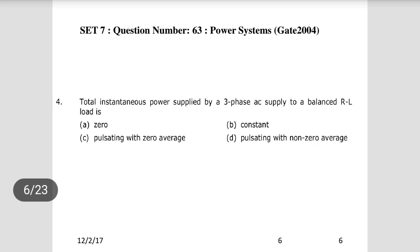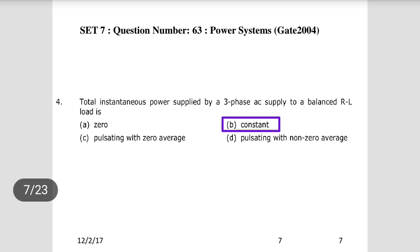Question 3: The total instantaneous power supplied by a 3-phase AC supply to a balanced RL load is constant. If it is a balanced RL load, the total instantaneous power supplied will be constant.